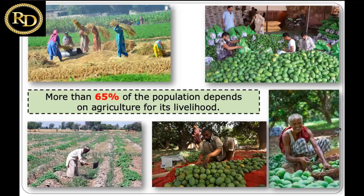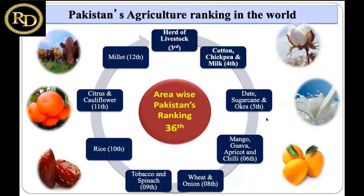More than 65 percent of Pakistan's population depends on the agriculture sector for livelihood, doing jobs from sowing to harvesting, picking, and packing. Comparing Pakistan with other countries, we are the third largest in livestock, cotton, chickpea, and milk; the fourth largest producer in the whole world. In the case of sugarcane and okra, Pakistan is the fifth largest producer. Pertaining to mango, guava, apricot, and chili, Pakistan is the sixth largest producer. Regarding wheat and onion, we are the eighth largest producer.